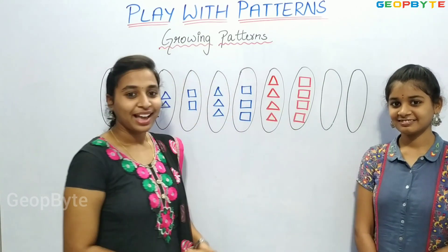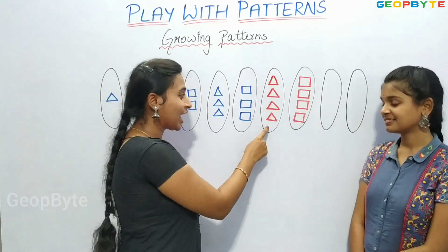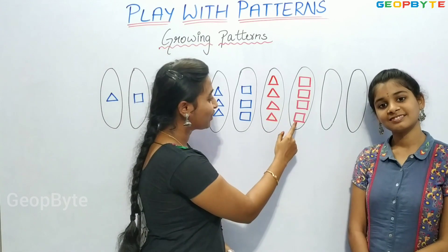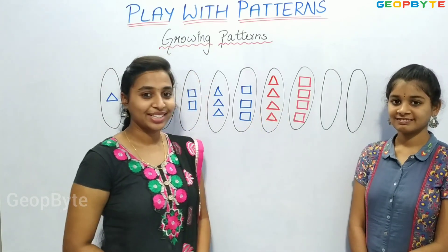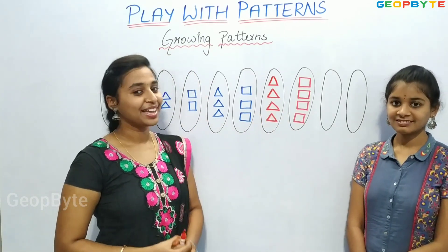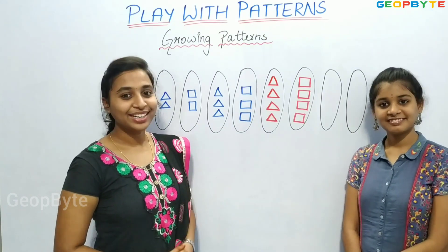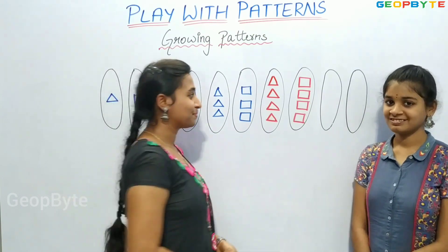Again, after four triangles and four squares, we will get five triangles and five squares. Let us draw.